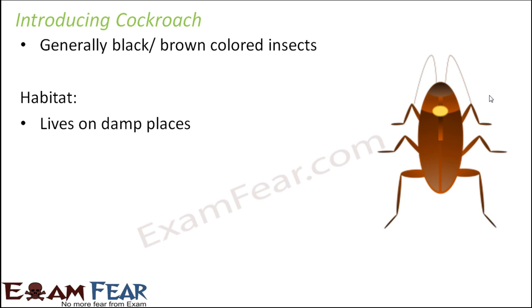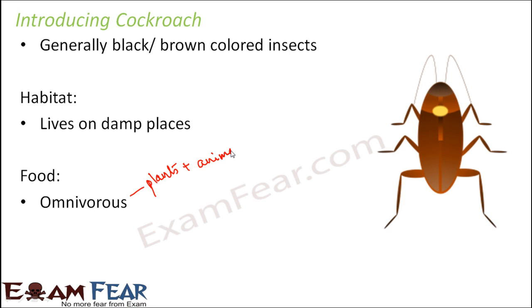Inside your houses, wherever you have damp areas like near the bathrooms or near the kitchen, wherever you have wet things being stored, you tend to find cockroaches. In terms of food, they are omnivorous — they feed on both plant parts as well as animal parts. They eat tiny insects, leftover food, and plant products like leaves.